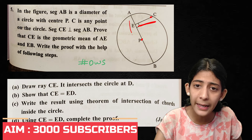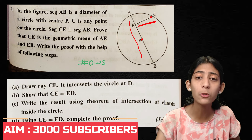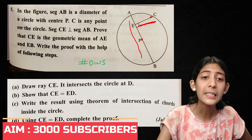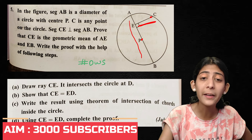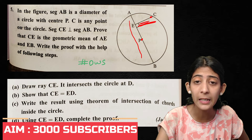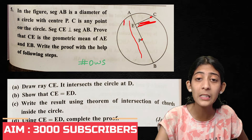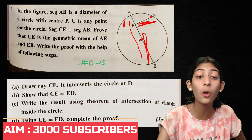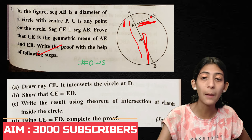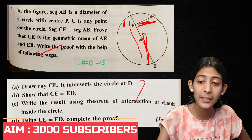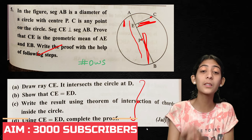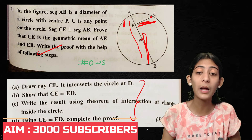The diameter AB is perpendicular to CE. Prove that CE is the geometric mean of AE and EB. Write the proof with the following steps — read all the steps and write the whole answer.